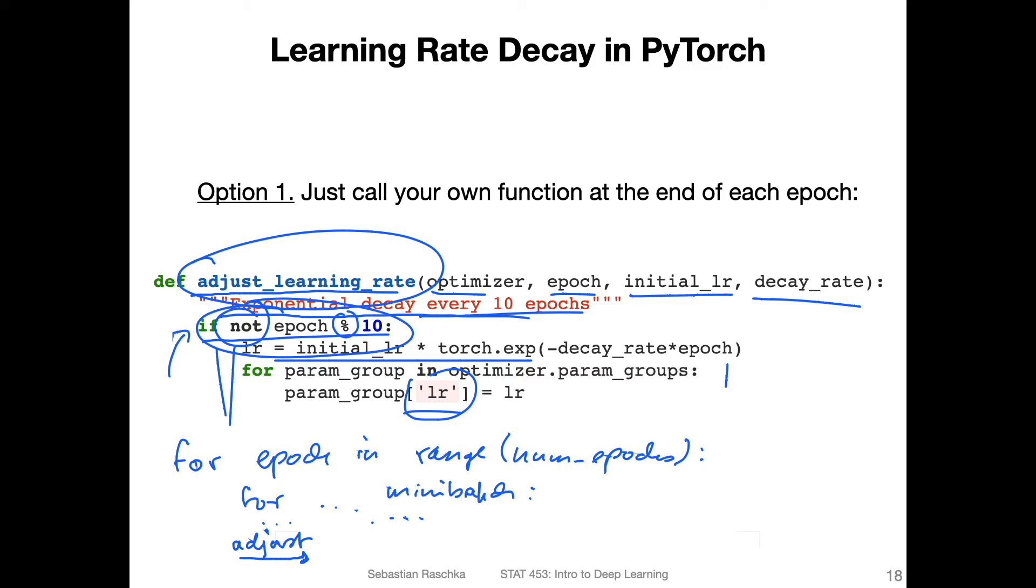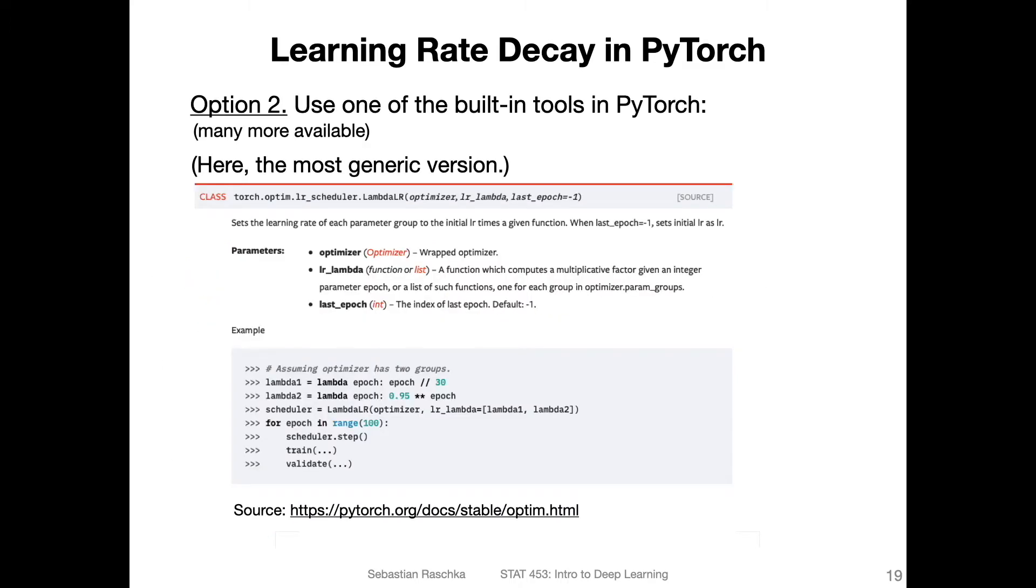However, this is just the manual way. So you can see how you could implement it yourself if you have an idea for a new learning rate. But in practice, if you want to just use an existing common way of doing learning rate decay, you can use one of the built-in functions in PyTorch. So for that, I recommend going to this website, they have a selection of different learning rate schedulers.